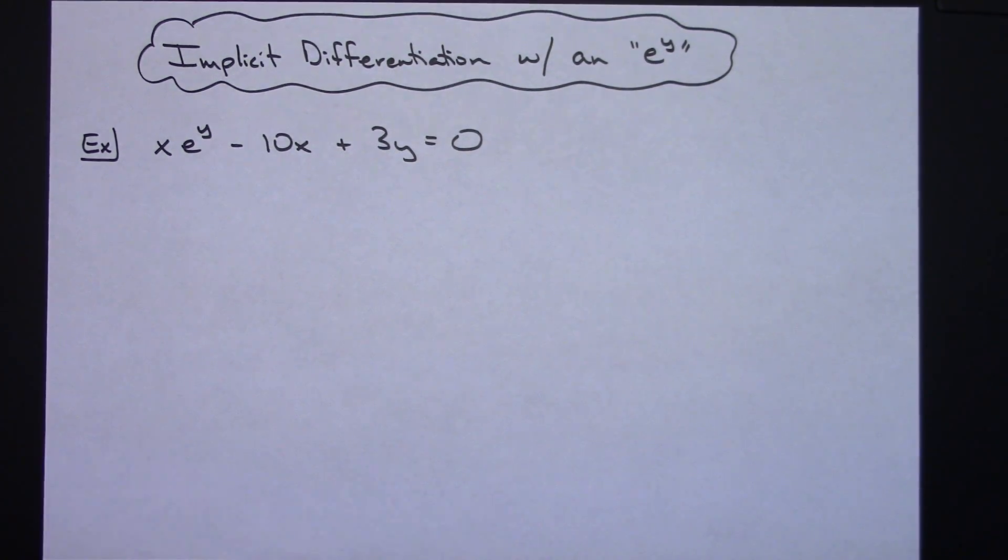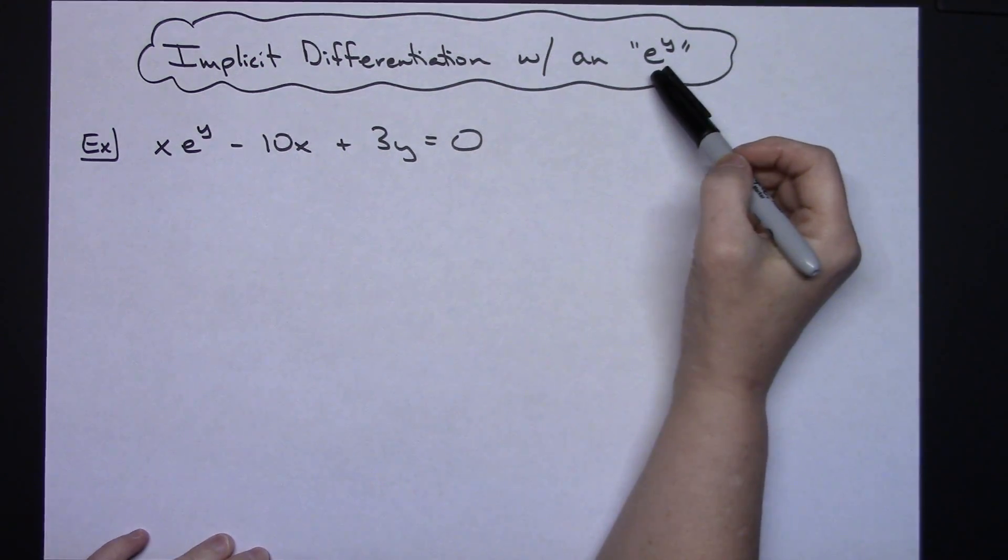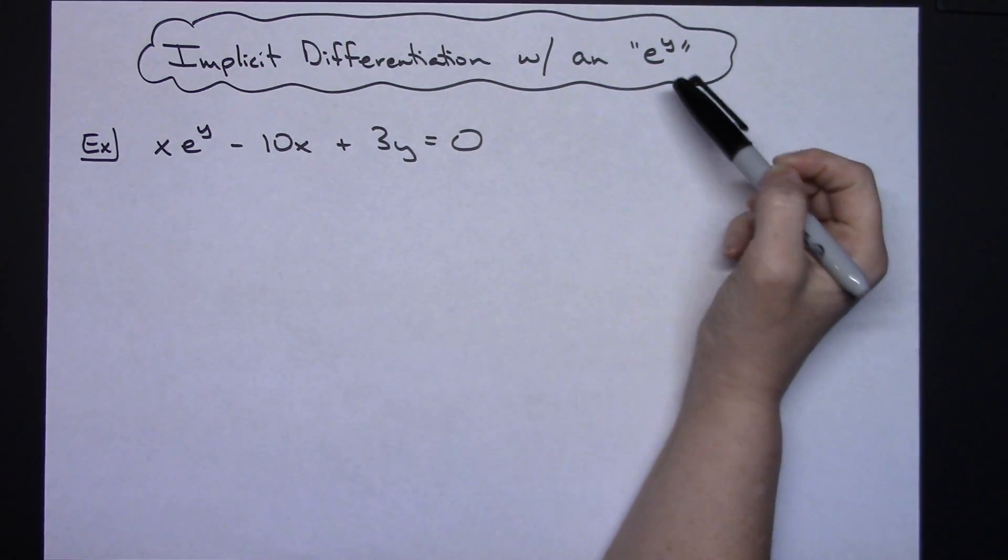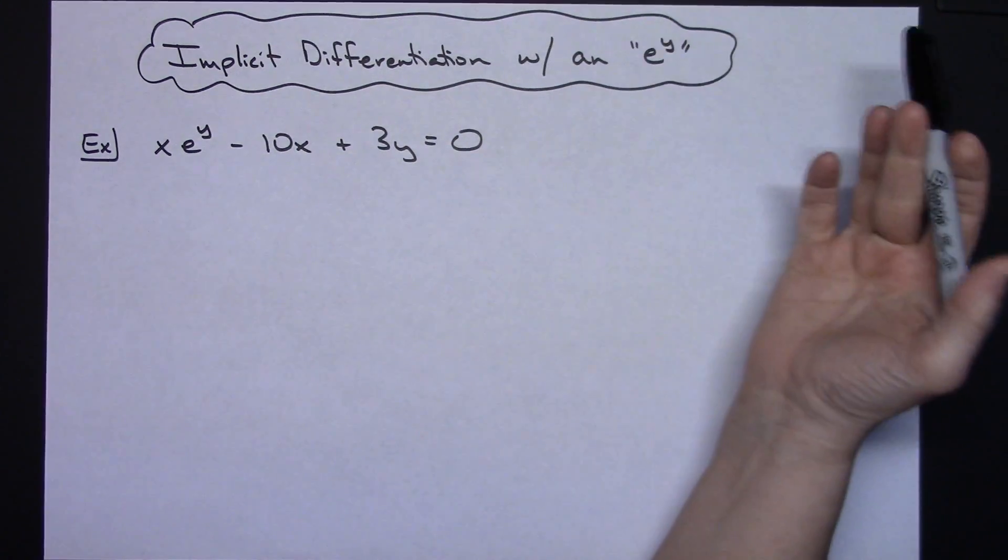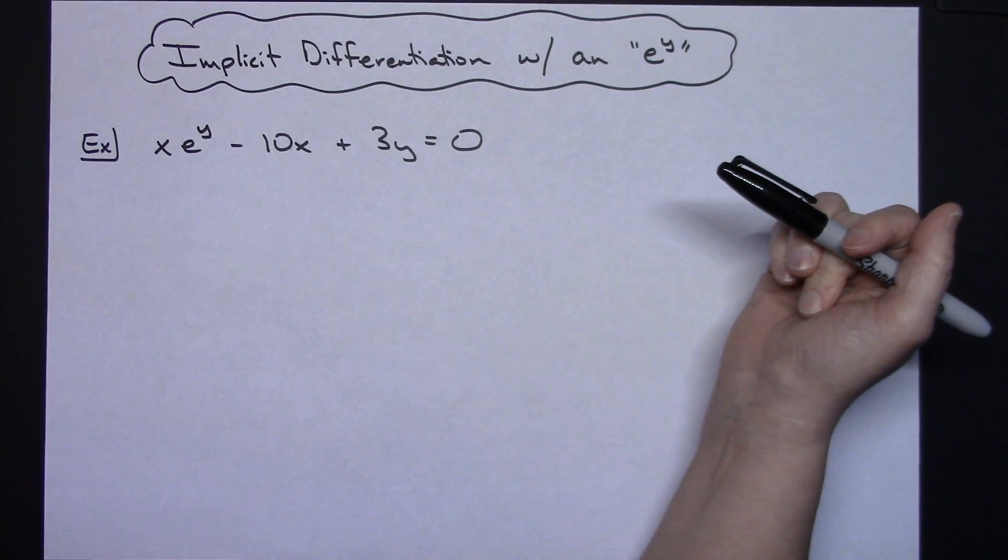In this video, I'm just going to work out one example of implicit differentiation where we've got an e to the y in it. This would be a transcendental function that would be thrown in on top of the implicit differentiation that's going on in the problem.